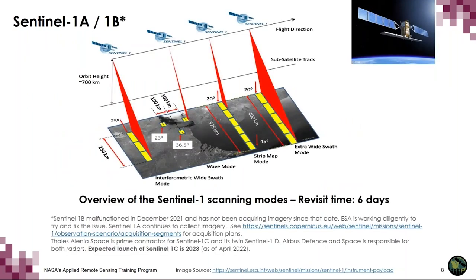Sentinel-1 data are available in interferometric wide swath, extra wide swath modes, all available as single-look complex data, acquired worldwide in a temporally and spatially consistent manner, making it very useful for agricultural monitoring. Sentinel-1B malfunctioned in December 2021 and has not been acquiring imagery since. ESA is working to fix this issue. Sentinel-1A continues to collect imagery, and you can check the ESA acquisition plans to determine coverage of your area of interest.